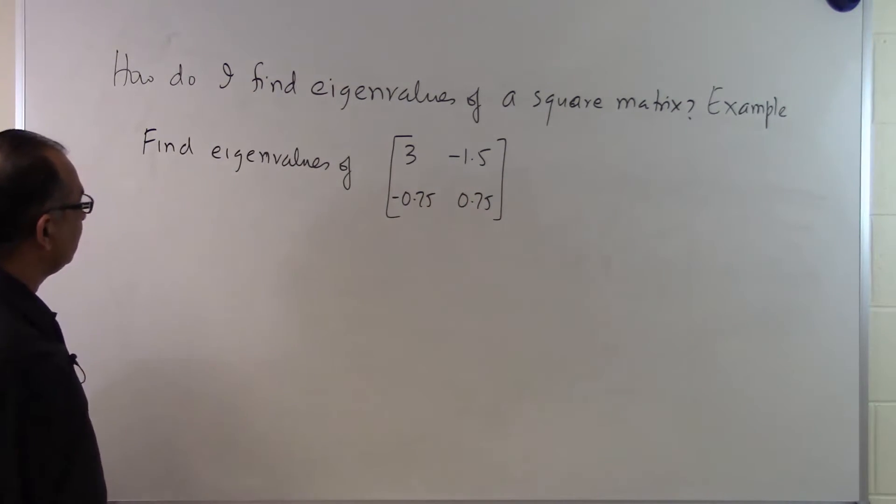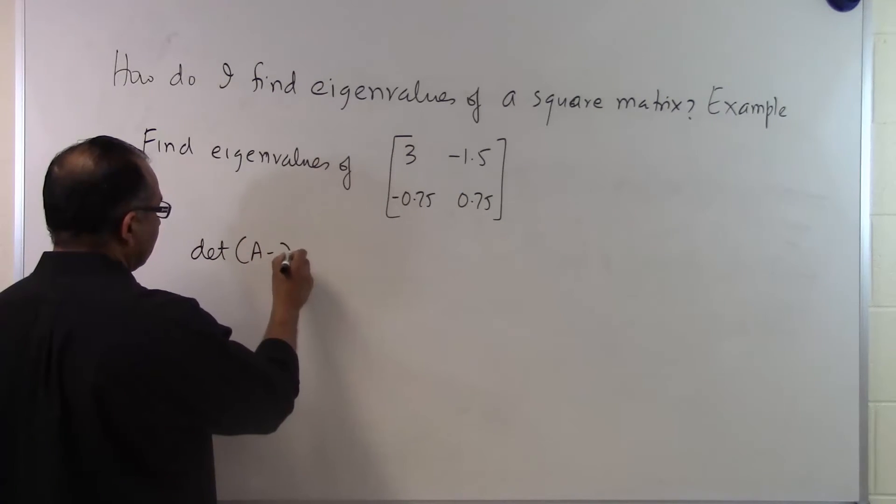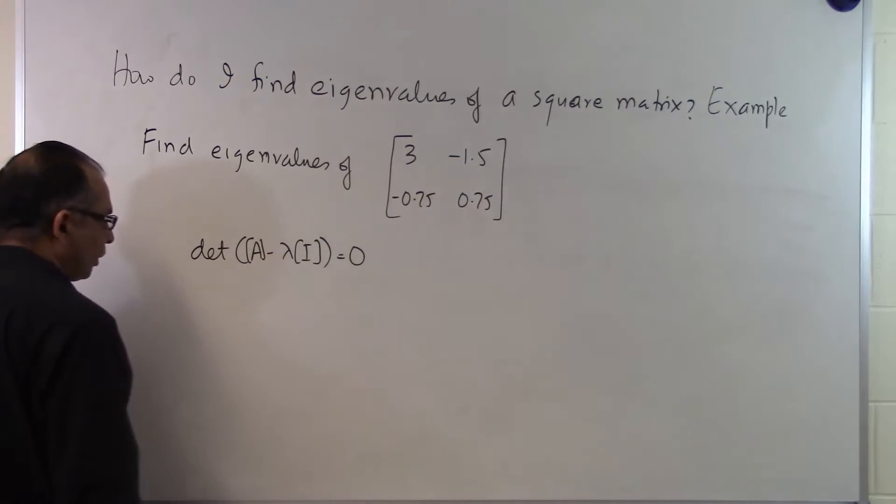So if this is the matrix given to you and you're asked to find the eigenvalues, we know that the determinant of A minus λI should equal zero, where A is this square matrix.